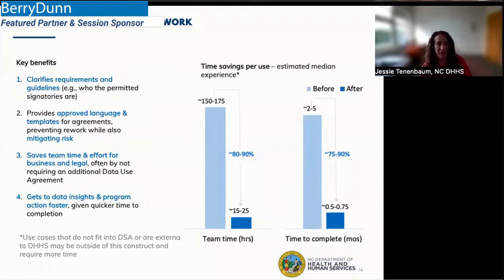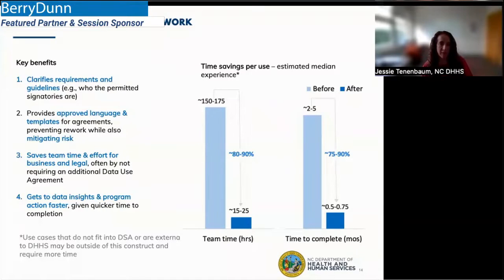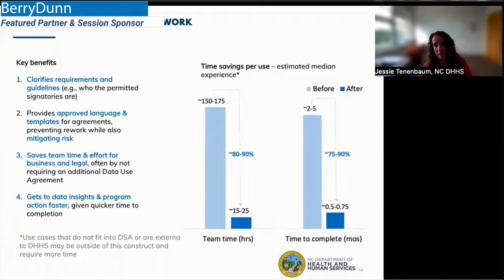As mentioned, we are already seeing the fruit of our labors. Benefits of this framework are that it clarifies guidelines — just knowing who is required to sign to say yes, you can use this data. It provides language and templates to mitigate risk and save time. Saves time from both the business and the legal team, often by not requiring an additional document. And then it gets data and insights to the program faster so they can act upon it and use data-driven policy. Showing the amount of time saved: we've seen an 80 to 90% reduction in the number of hours required by business and legal together, and a really significant decrease in the end-to-end time to complete in months as well.